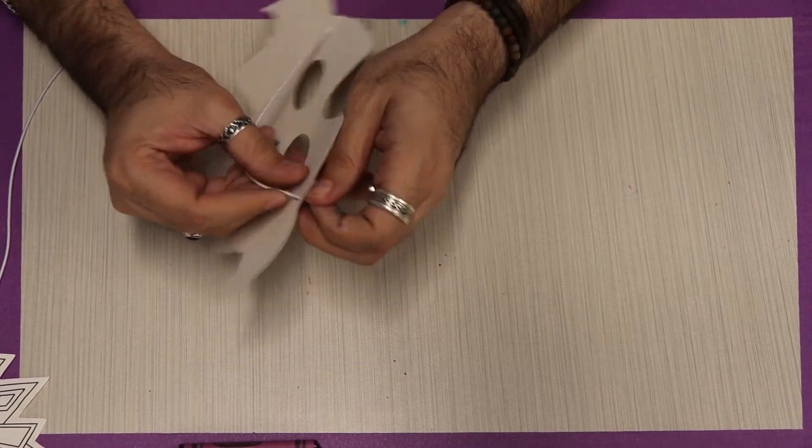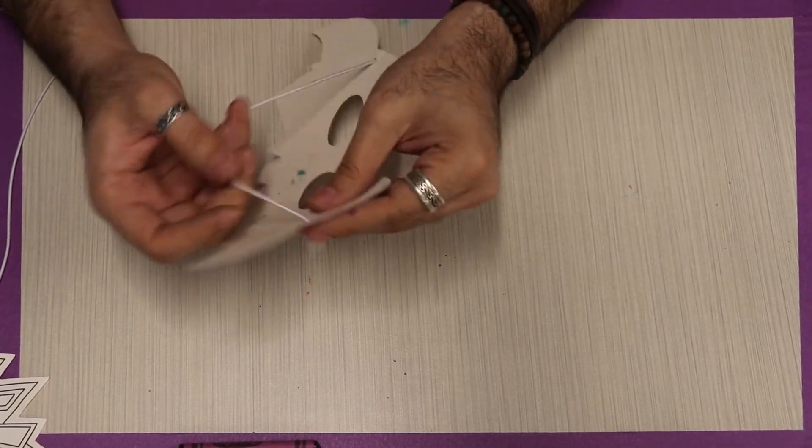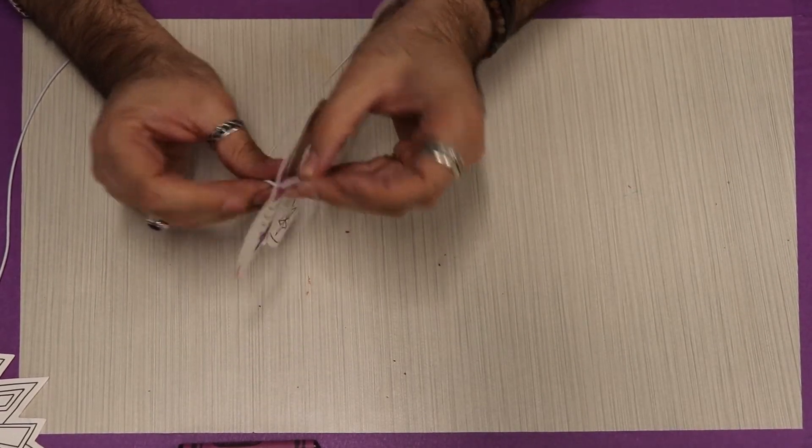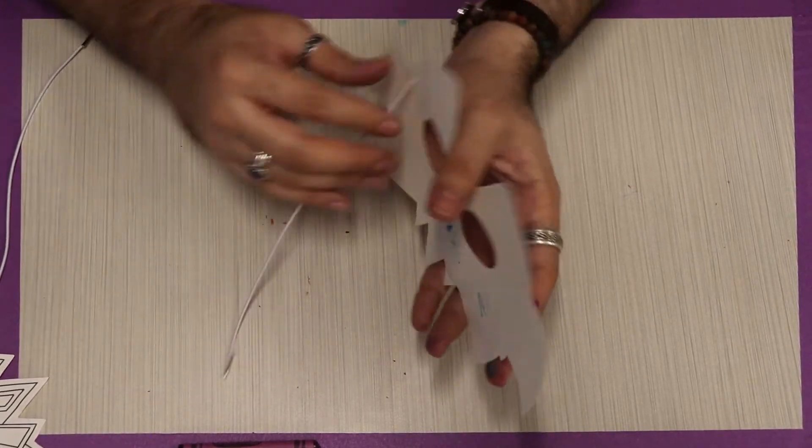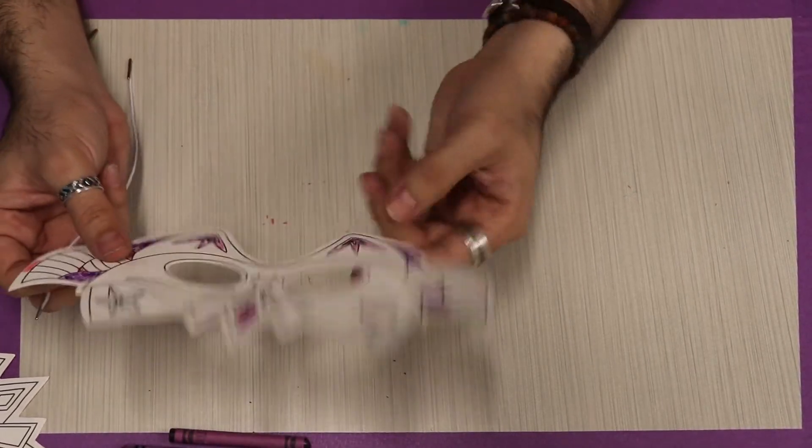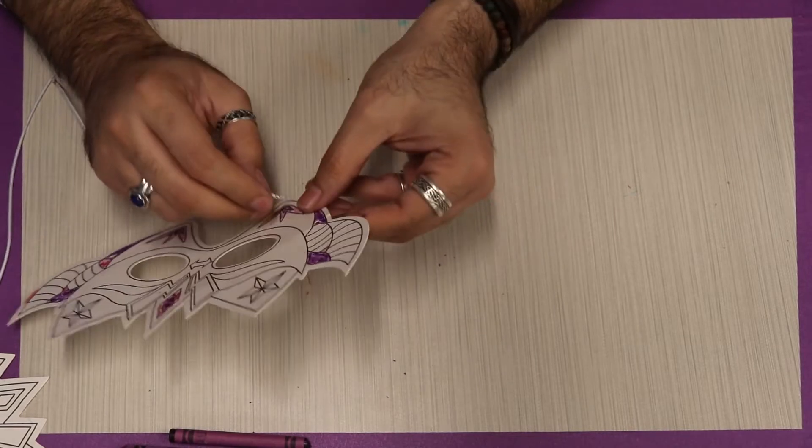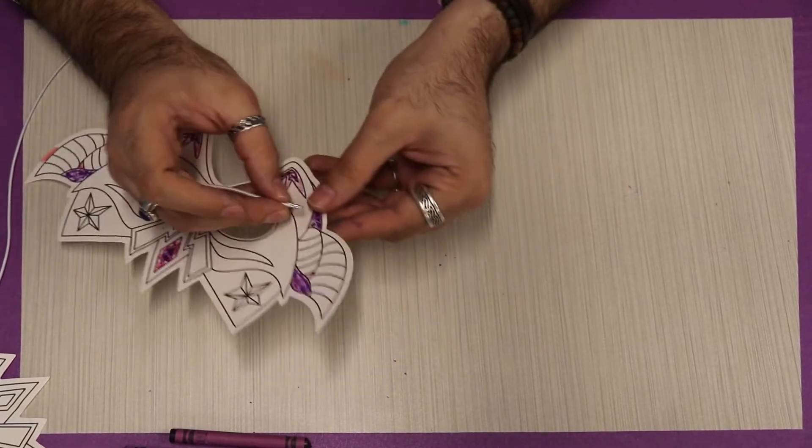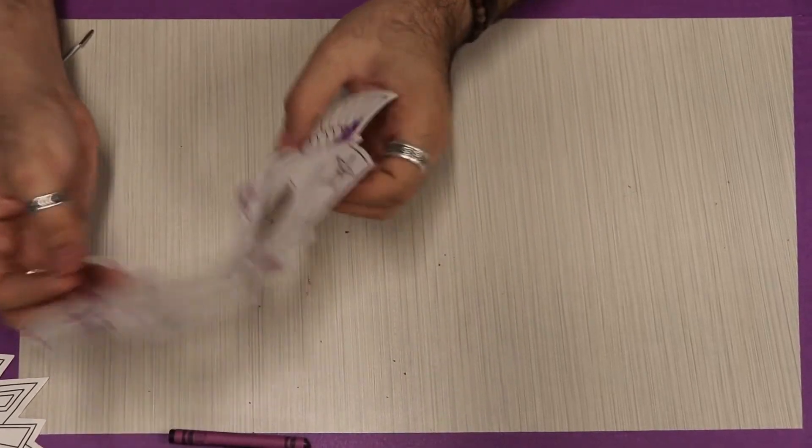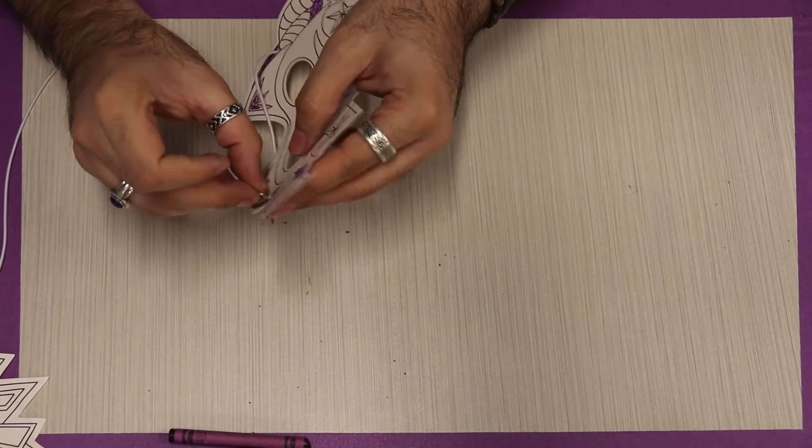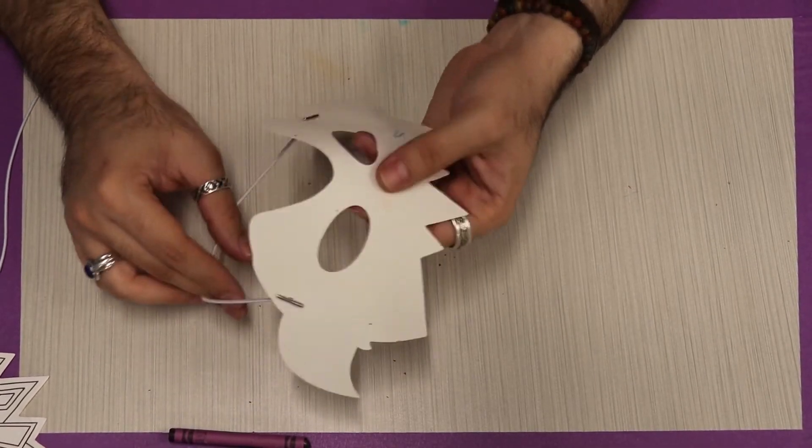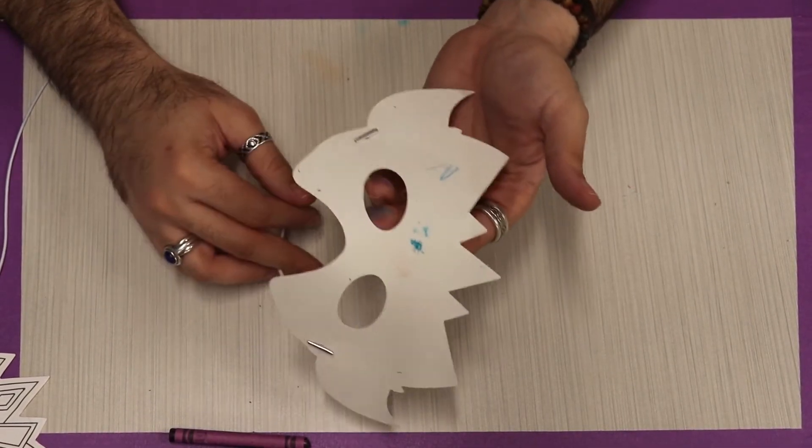Now there is another option for you. So say you don't like this design and you want to come up with your own design. That's perfectly okay. What you can do is you can take the string off or have your parents, guardian, sibling take the string off for you and then put it through backwards like so. And now you have a blank mask that you can design yourself.